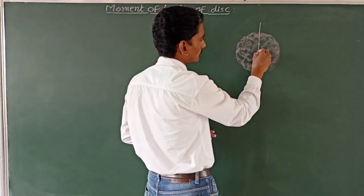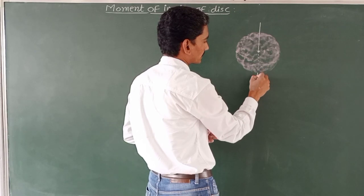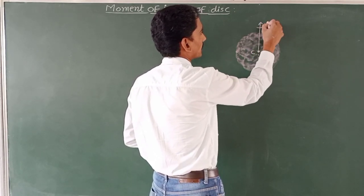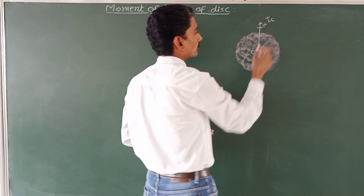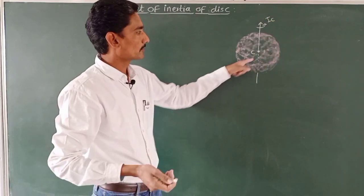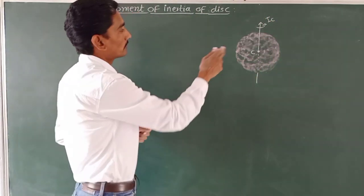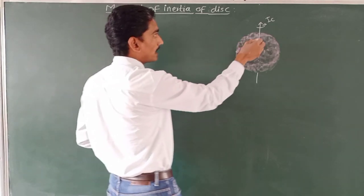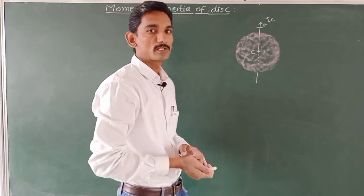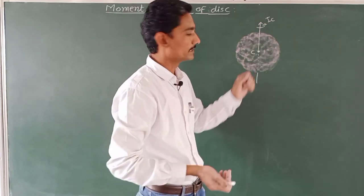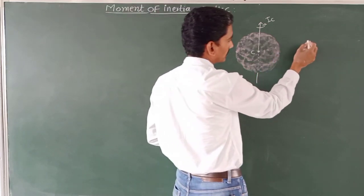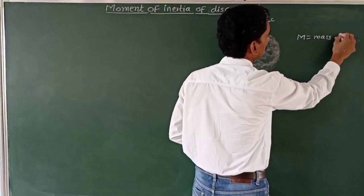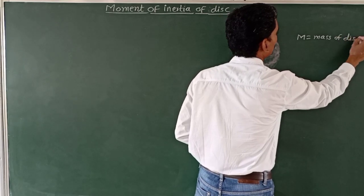This is the axis of rotation which is passing through its centre. I_C indicates the moment of inertia of this disk about an axis passing through the centre and perpendicular to its plane. This disk is having mass capital M, which is the mass of the disk.